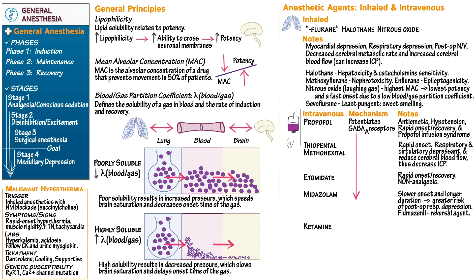Ketamine is an NMDA receptor antagonist. It can produce dissociative anesthesia with preserved consciousness, but the patient experiences catatonia, analgesia, and amnesia. Emergence reactions are common, with psychotic and sometimes injurious behaviors. It is also a cardiovascular stimulant and can produce increased intracranial pressure.